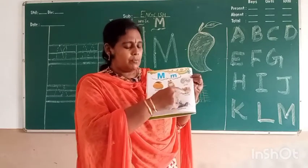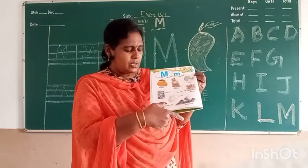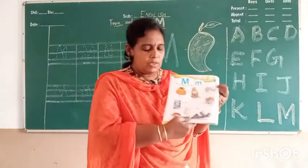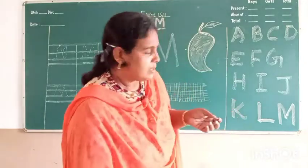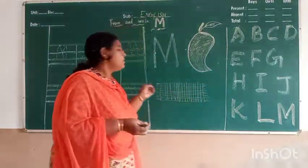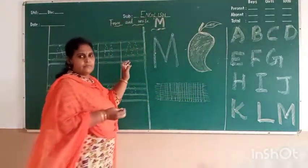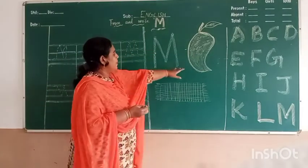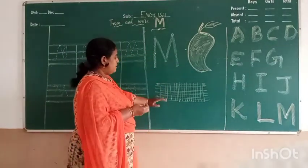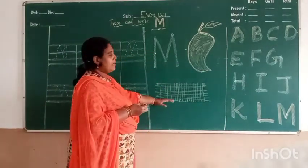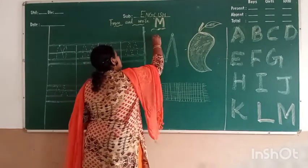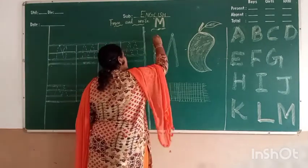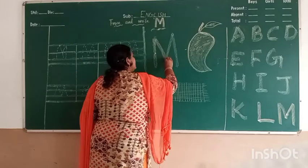Now, how to write M. M for little M, M for mango, M for math. Listen — standing line, sliding line, sleeping line.